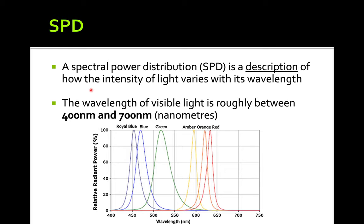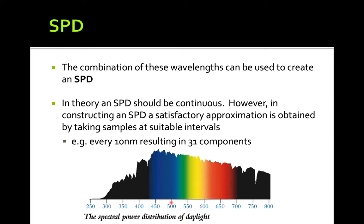Spectral Power Density (SPD) describes how the intensity of light varies with wavelength, from 400 to 700 nanometers. At shorter wavelengths, blue has higher intensity; at medium wavelengths, green has higher intensity; and at longer wavelengths we have yellow, orange, and red. Each color has a different intensity at different wavelengths — blue has short wavelength, green has average, and red has high wavelength.